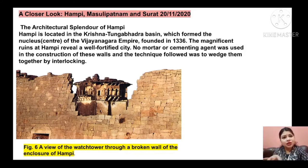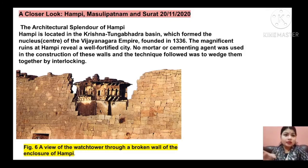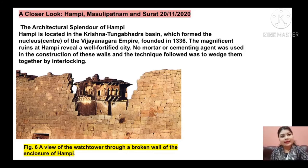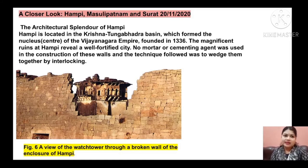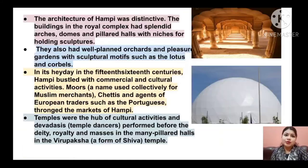Through the picture you can analyze that no cementing agent or mortar was used in the construction of these walls. The technique followed was to wedge them together by interlocking, or overlapping them. That is the technique — wedging together by interlocking or overlapping. I hope now you are clear with the first slide. Let's proceed to the second slide.